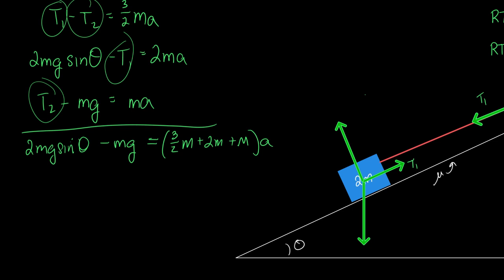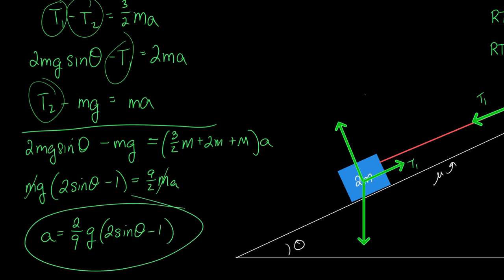I just added all of those things up. Factored out the a. I get net force equals inertia times a. Newton's law. These were the two things that caused the motion of the system. Tension is internal. I'm going to factor out the mg here and get 2 sine theta minus 1 equals 9 halves m a. I can get rid of the m's and say that a equals 2 ninths g times 2 sine theta minus 1 that's the acceleration of the system.